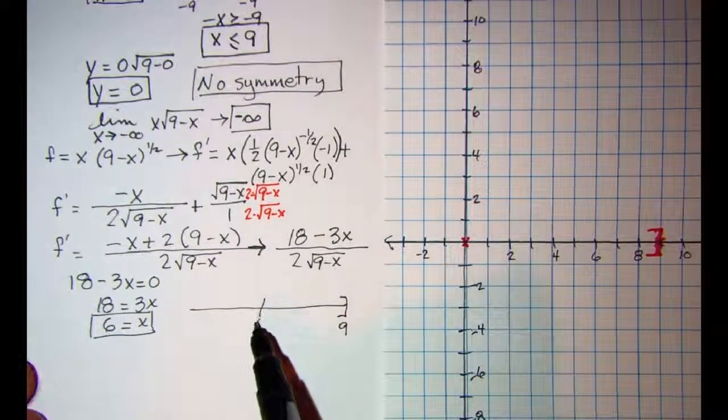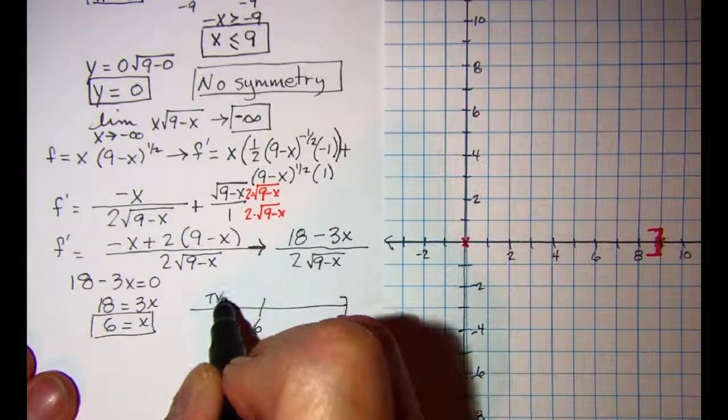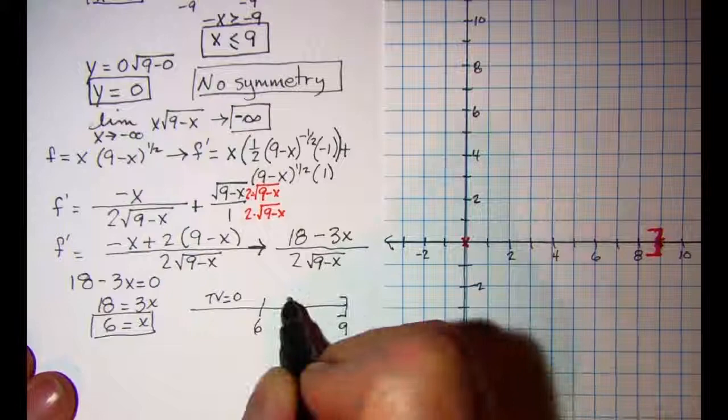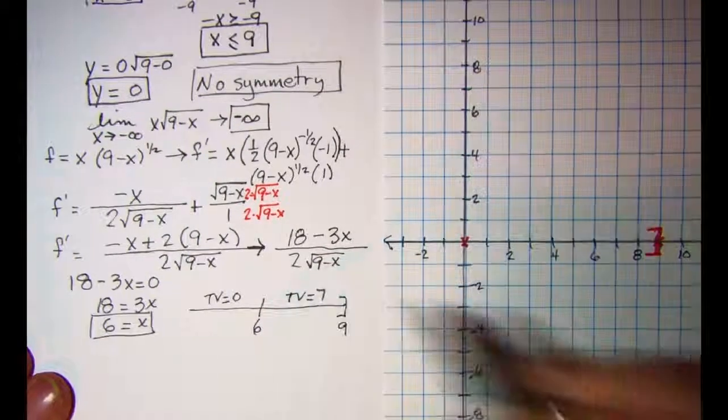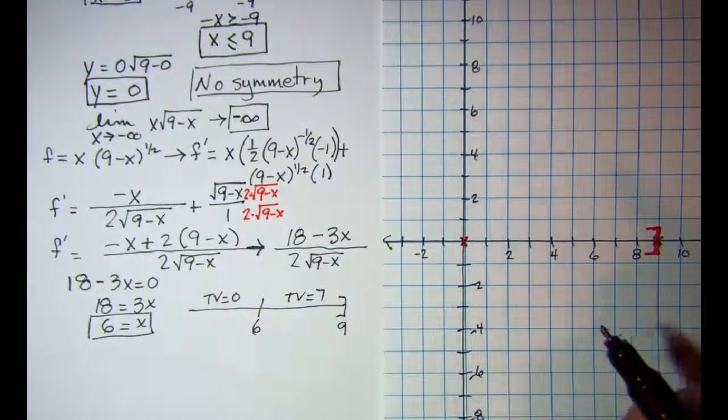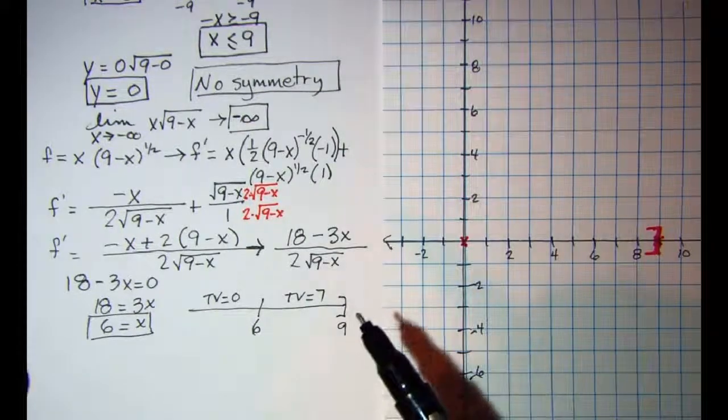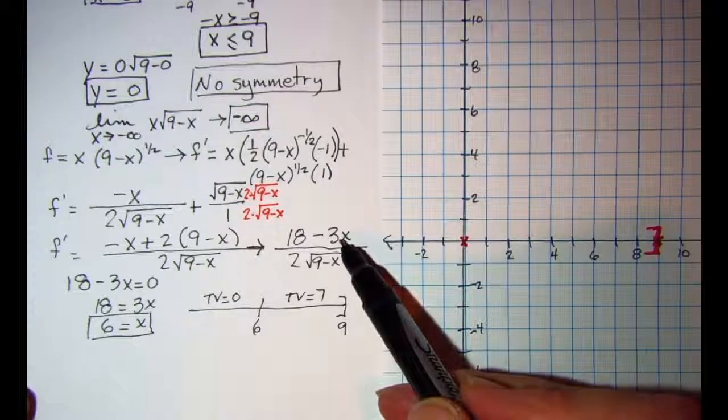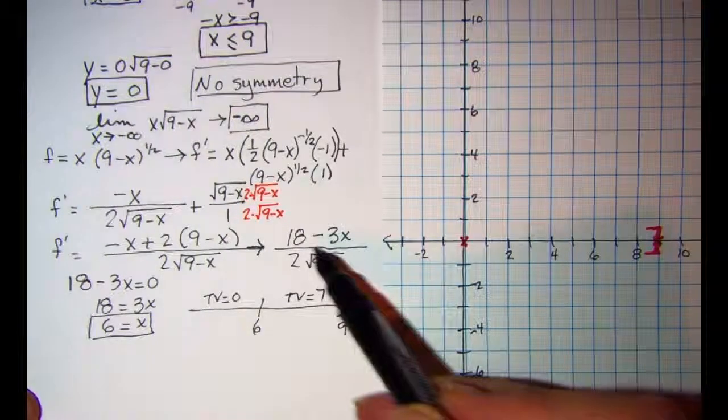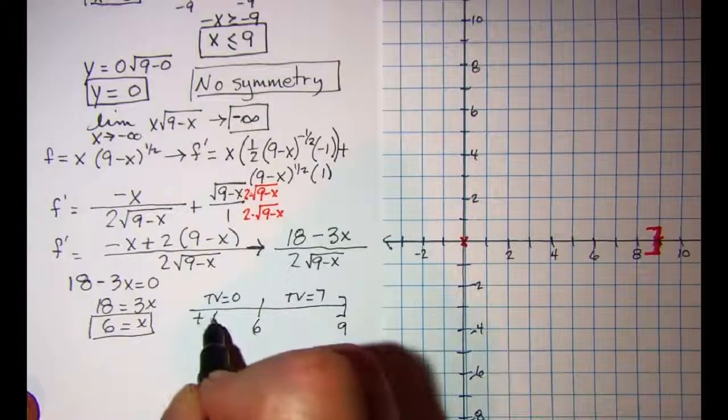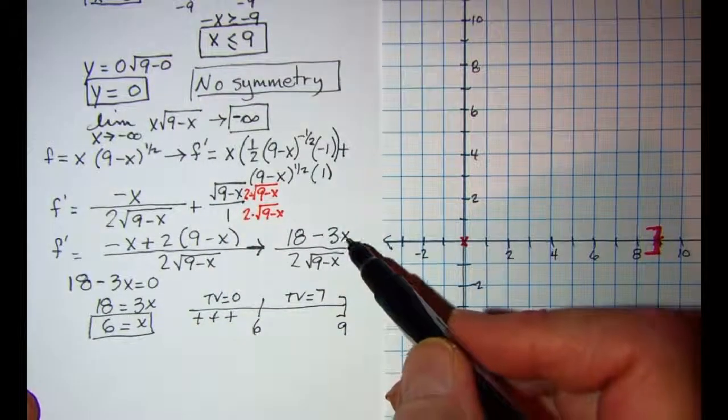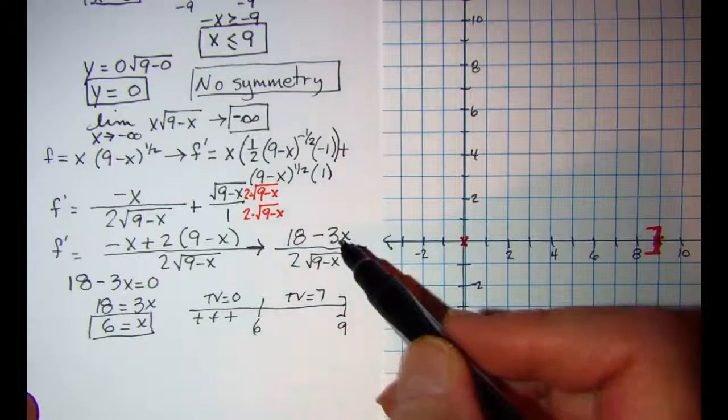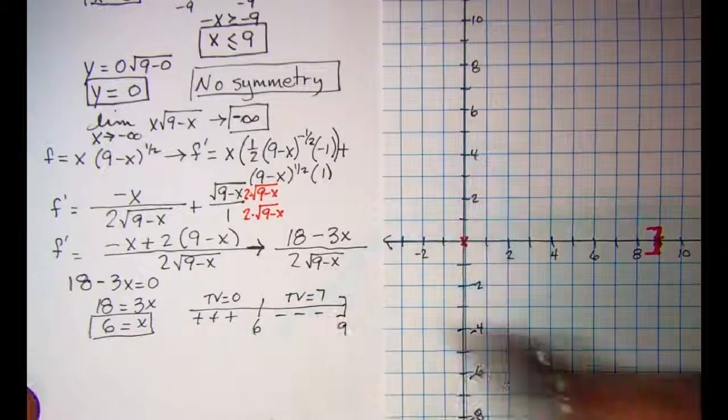So if I check a test value of 0 and then a test value of 7 in my derivative, a test value of 0 would give me a positive derivative, and a test value of 7 would be a negative derivative.